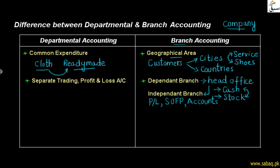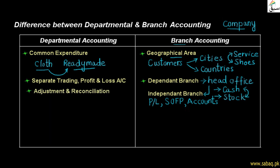Now, in departmental accounting, there is no need for adjustments and reconciliation with the head office. Each department is part of the same entity. The department records its information and keeps its records separately. When each department shows its profit or loss, the company knows how much overall profit or loss is coming in. So, no adjustment or reconciliation is required.